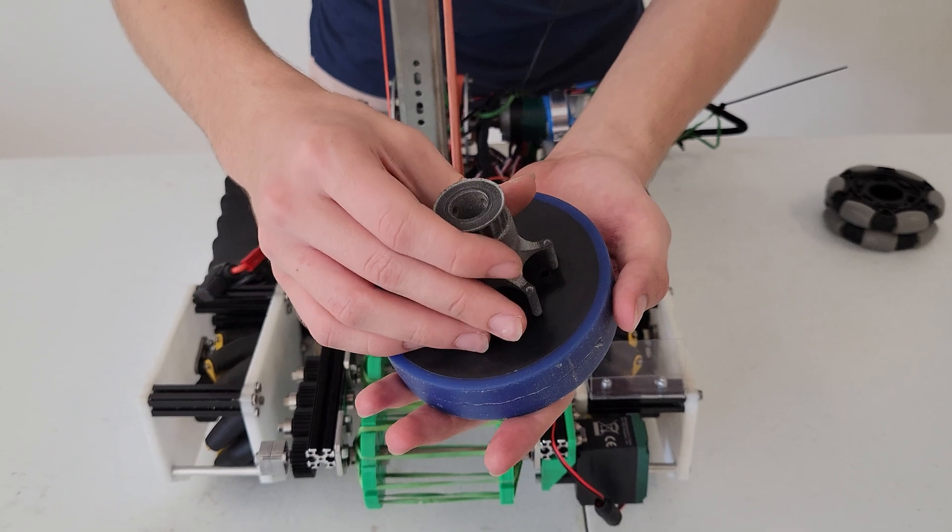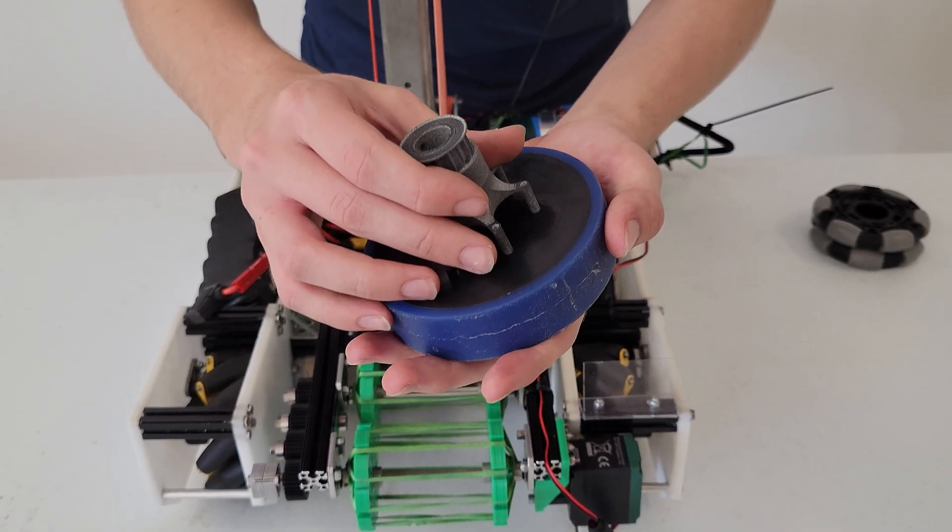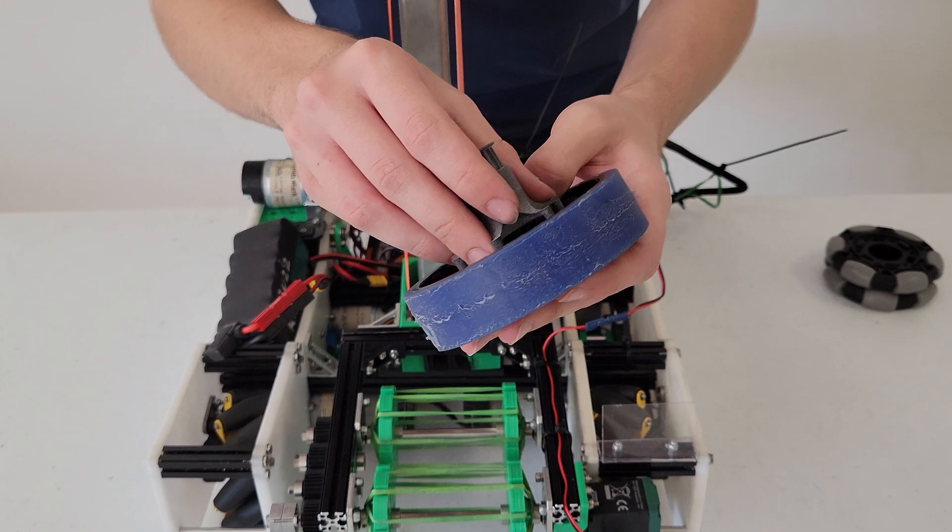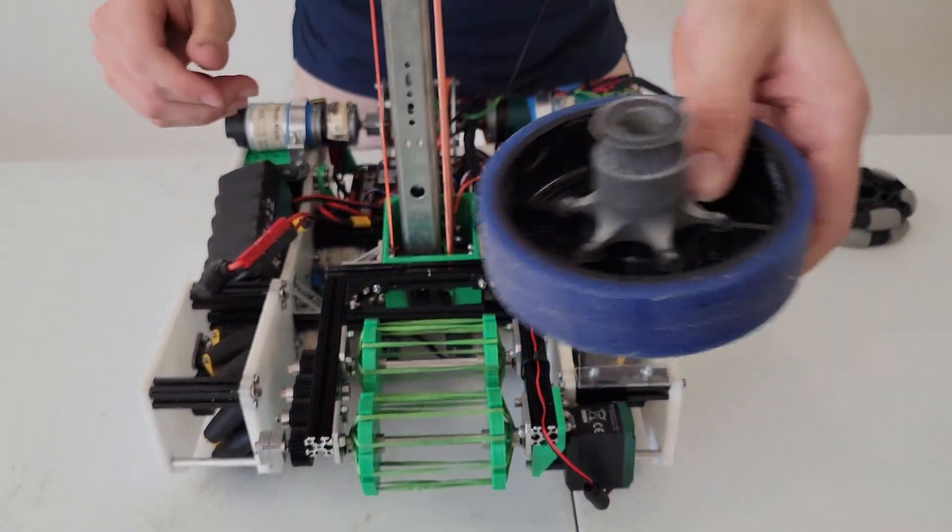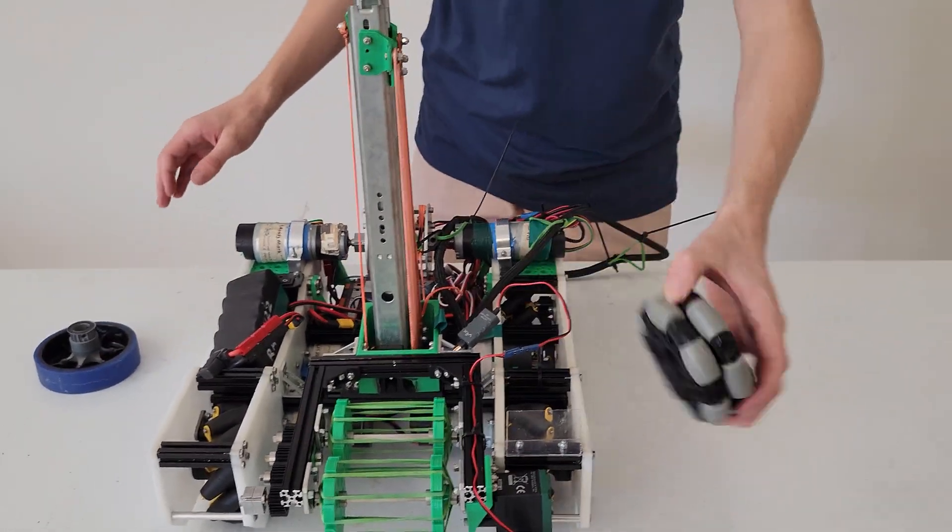This is a custom pulley mount we made for this grip wheel. It slots straight into there like that, so now we can spin it. We did that on our mecanum wheels too and our omni wheels.